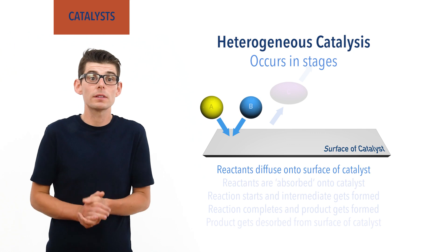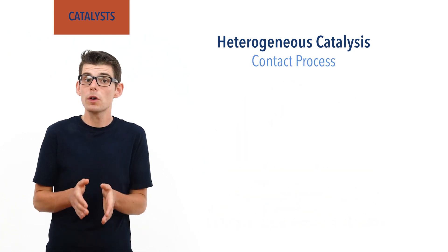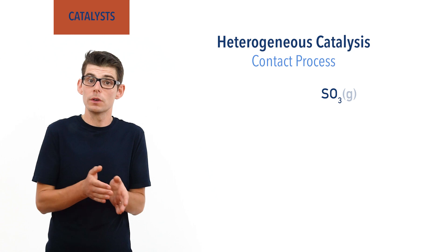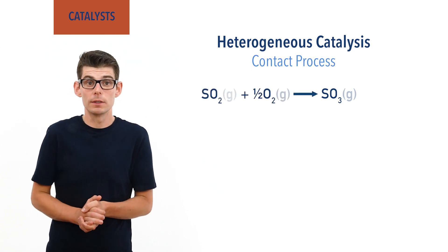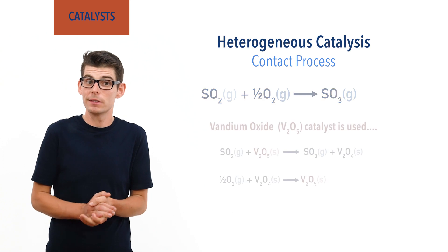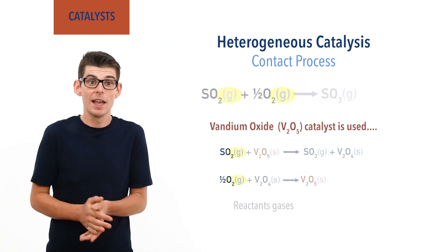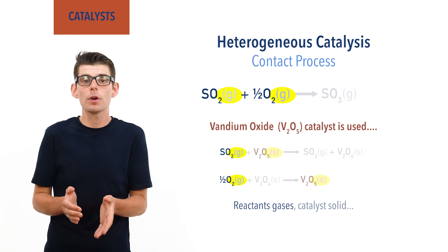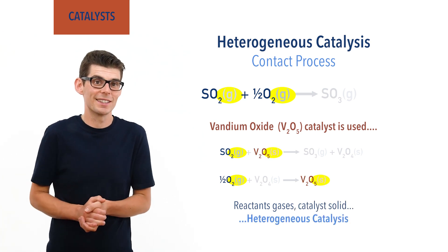A common example of this is the contact process, where sulfur trioxide is formed from sulfur dioxide and oxygen, both gases. A solid vanadium oxide catalyst is used, and as the reactants are gases and the catalyst is solid, the process is described as heterogeneous catalysis.